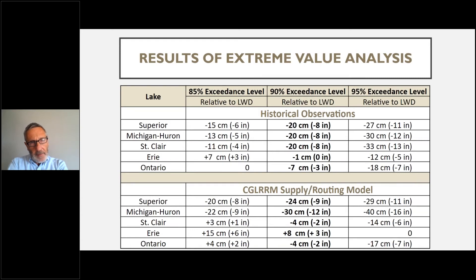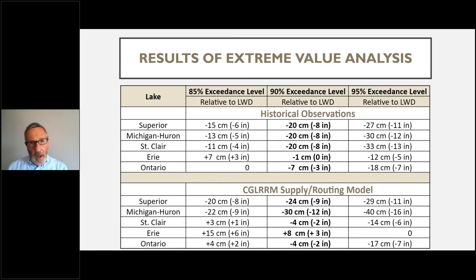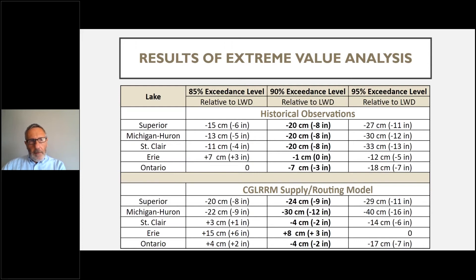This table presents our results from the extreme value analysis. The upper half shows the GEV results from the historical data, with columns of 85, 90, and 95% annual exceedance probability given with respect to the existing low-water datum. The lower half shows the results from the model data, also with columns showing annual exceedance probability levels. We are considering the 90% annual exceedance probability as a sensible choice to define the low-water datum, which would result in lake levels going lower in only 10 years per century. For Superior and Michigan-Huron, either observed or model data indicates the low-water datum should be lowered by 8 to 12 inches.